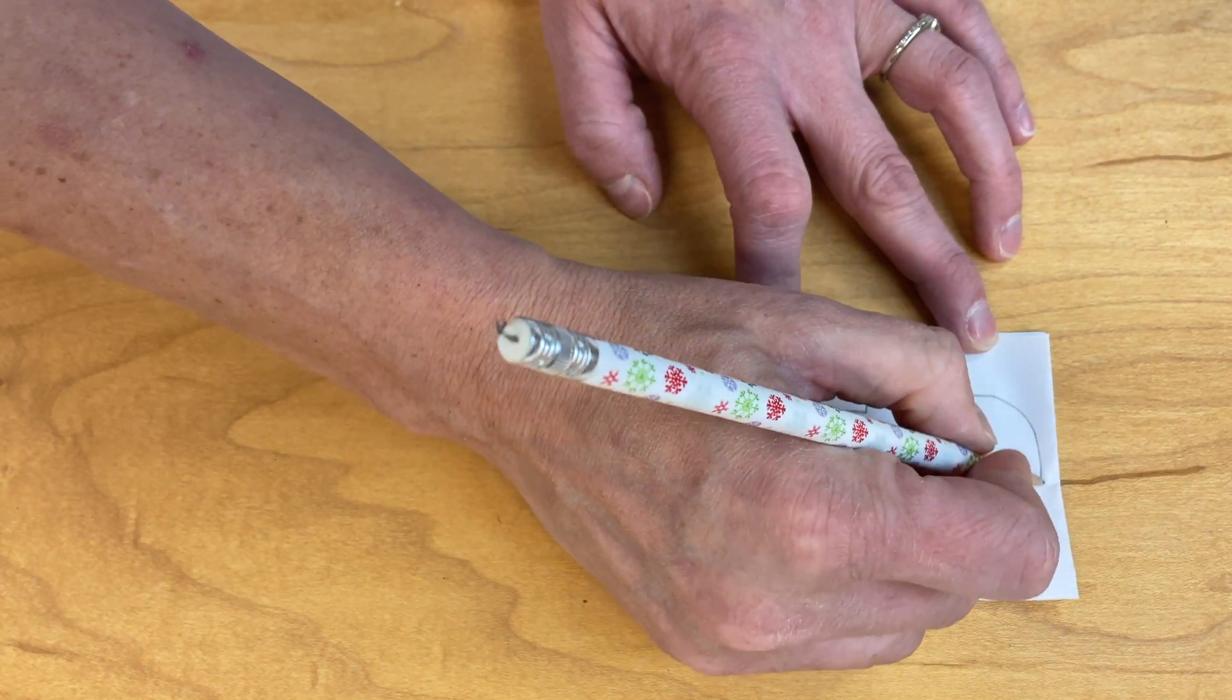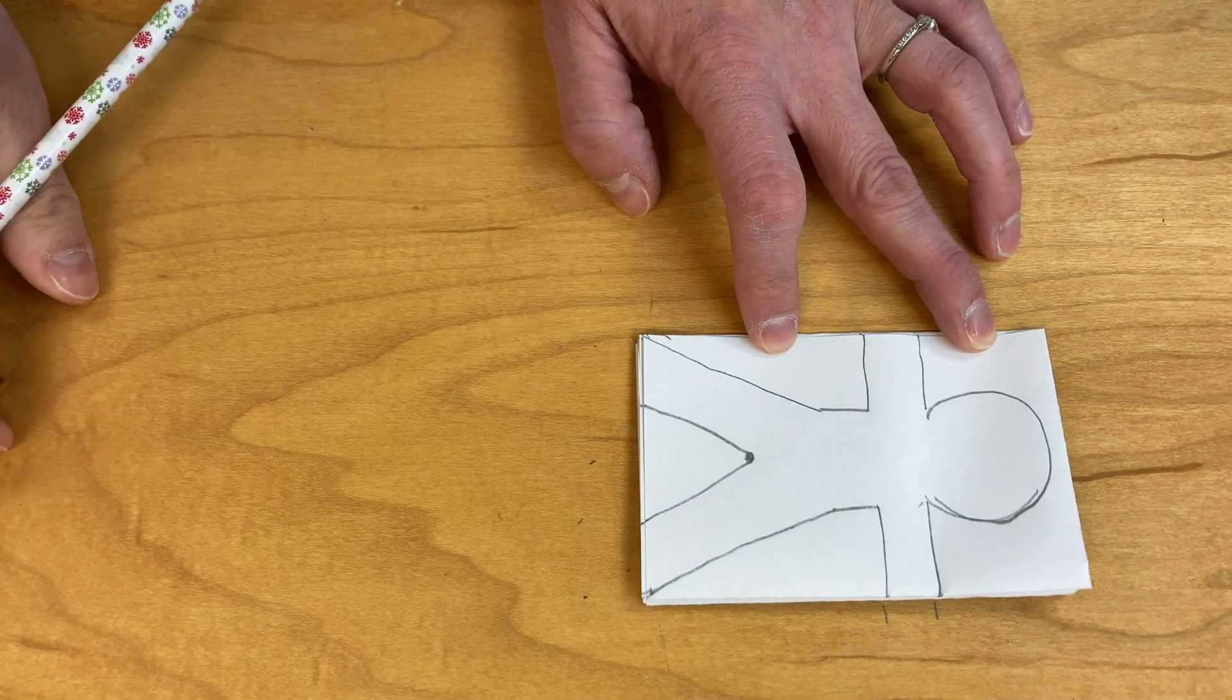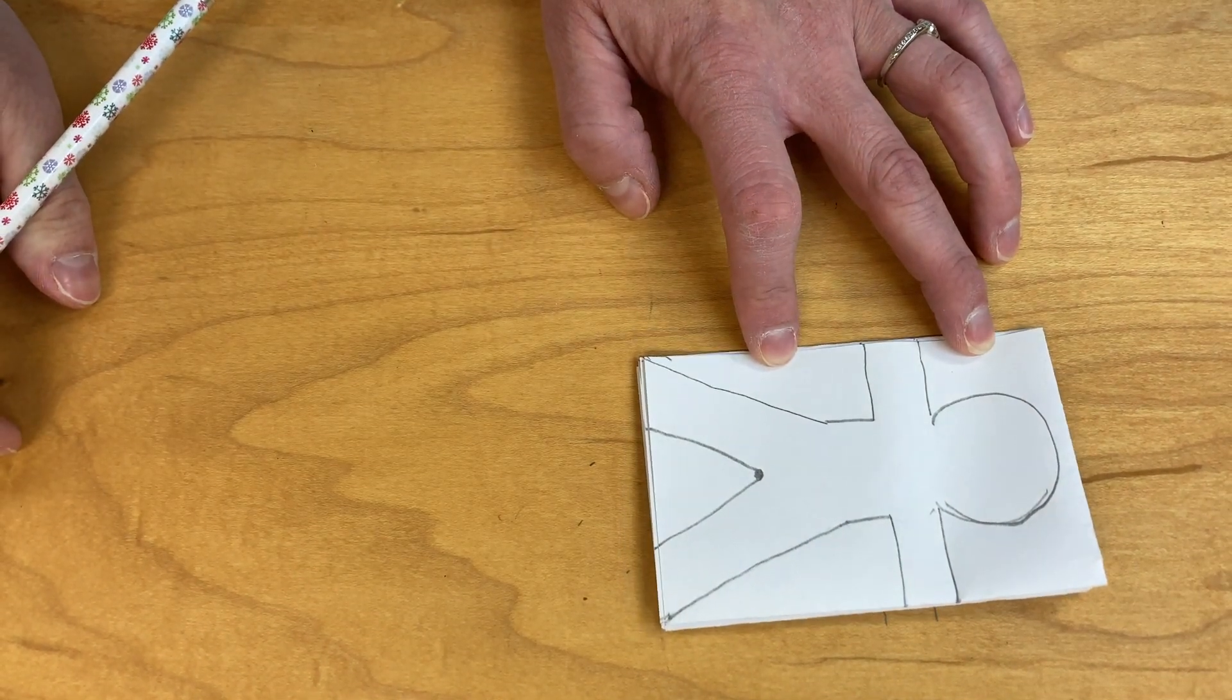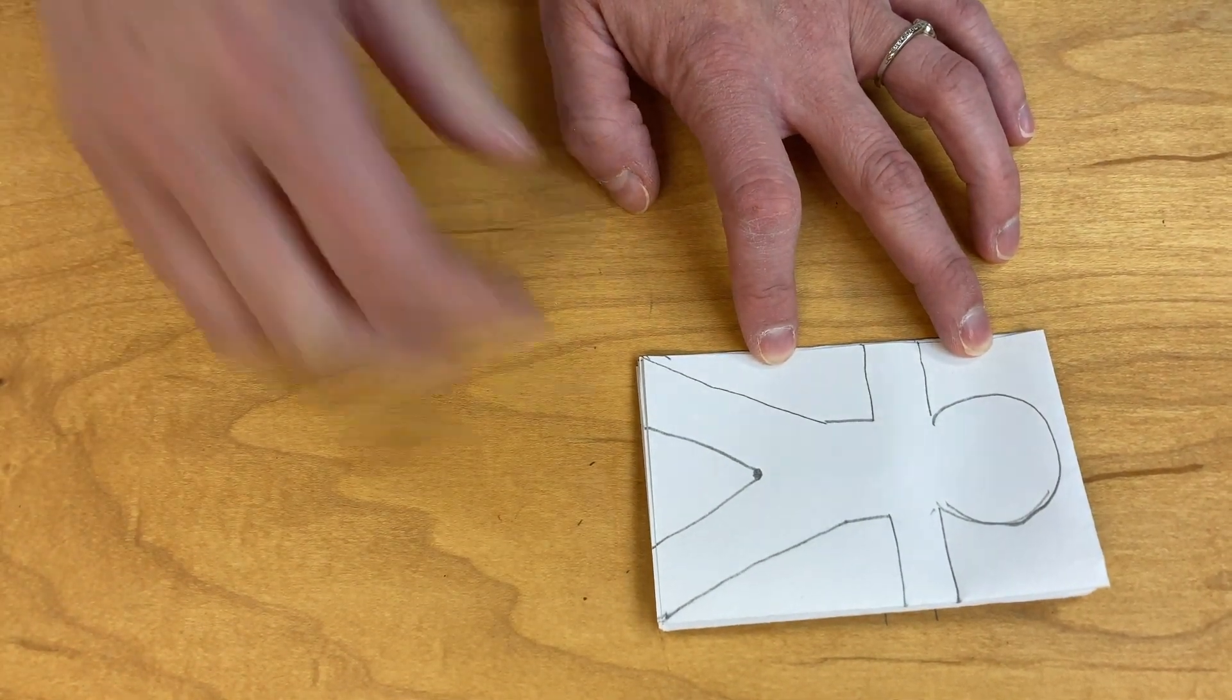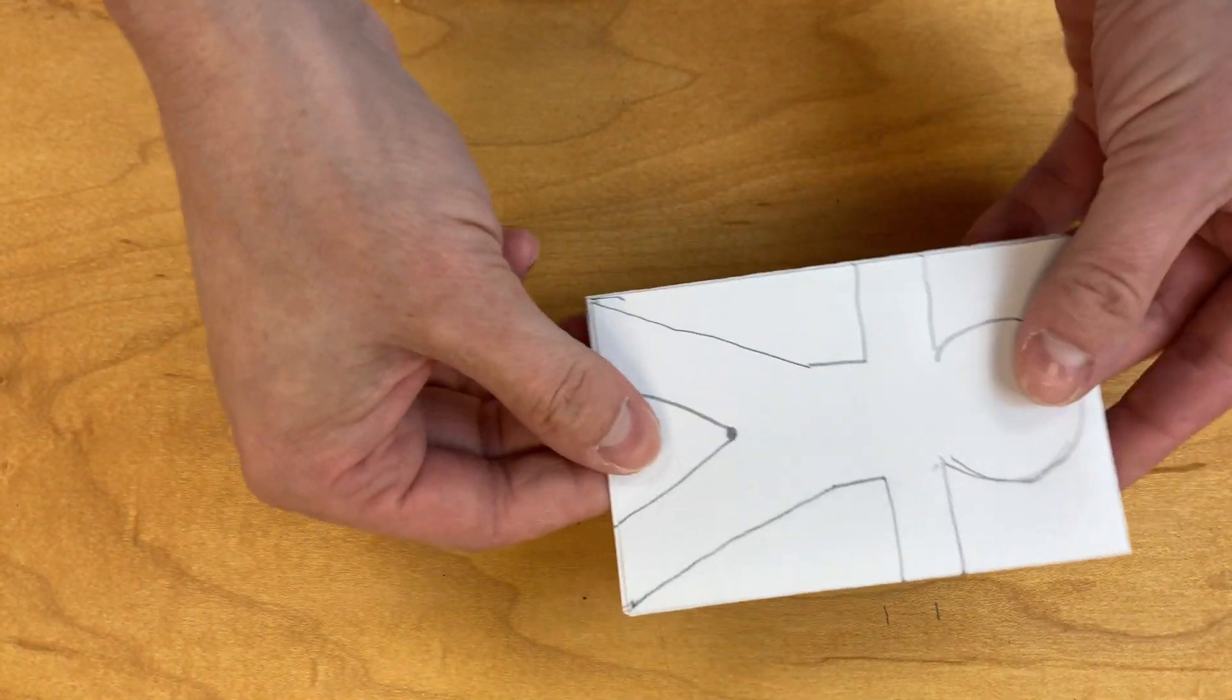And then we're going to draw a giant circle right above those arms for the head. That is our body. That's all it takes. That's all you need to draw, just like that.